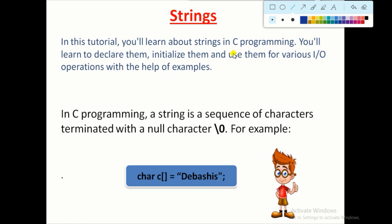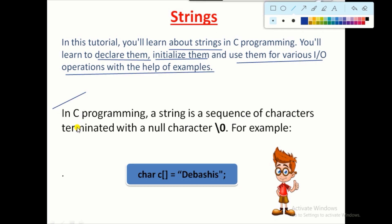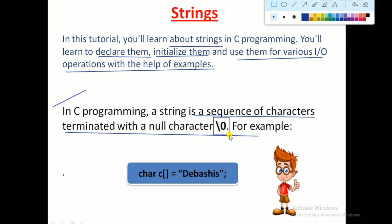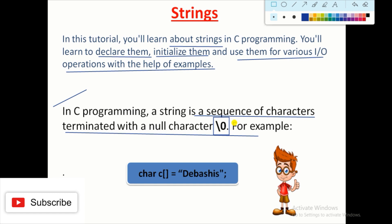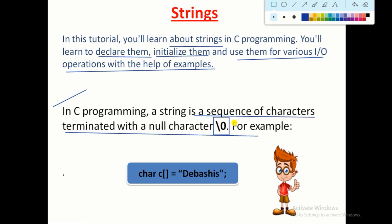In this tutorial you will learn about strings in C programming — how to declare them, initialize them, and use them for various input/output operations. In C programming, a string is a sequence of characters terminated with a null character, that is '\0'. You have to always remember that a string is terminated with a null character. Another definition: a string is a character array with one dimension, so it is basically a one-dimensional array where we store values following the same procedure as arrays.